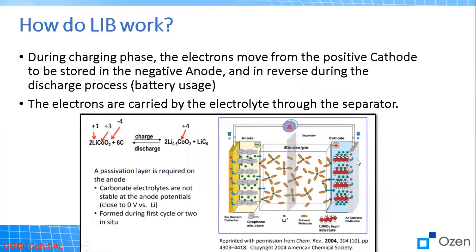So how does the lithium-ion battery work? When we charge the battery, the electrons move from the positive cathode to the negative anode, and when we discharge, it's vice versa. We can see here the equations that happen between the lithium-coupled oxides and the graphite. During discharge, what we get is LiC6, and vice versa — if we're discharging, the graphite will be separated.